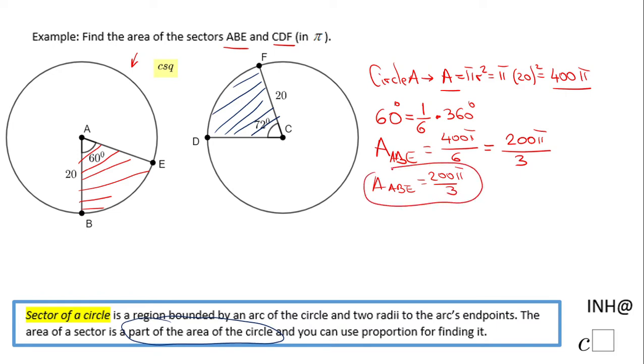Now let's move to the second part, Circle C. If you notice, we have the same radius of 20 like this one, so Circle C has the same area, which is 400 pi. And now we look at this angle, the central angle of 72 degrees.